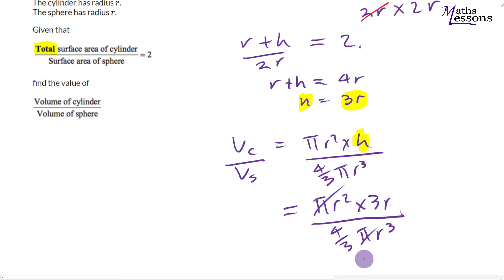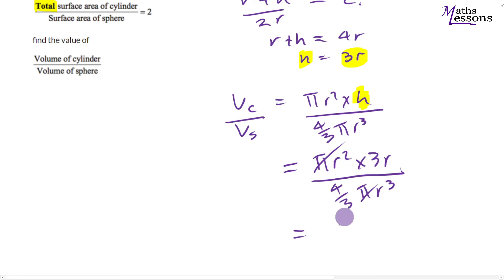We can see we can cancel out the pi. We've got r squared times r, which is just r cubed. Let's just write that so it's easy for you to see. So we get 3r cubed on the top and a 4 thirds r cubed on the bottom. They cancel.